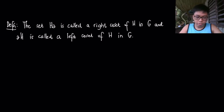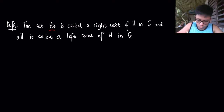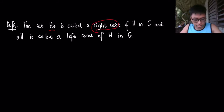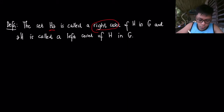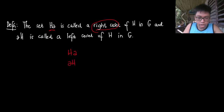We have the definition here. The set H·A is called a right coset of H, and the set A·H is called the left coset of H in G. The identification is: when A is on the right of H, then this is a right coset of H. When A is on the left of H, then this is a left coset of H.